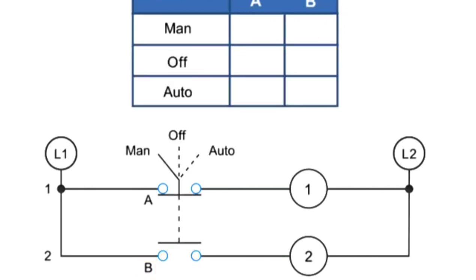In this illustration of a three-position, a third row is added to the truth table. So we now have a manual position, an OFF position, and an AUTO.